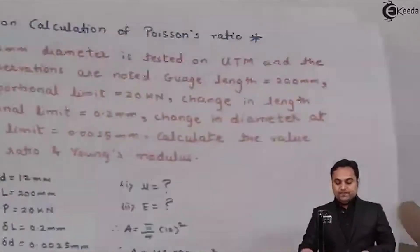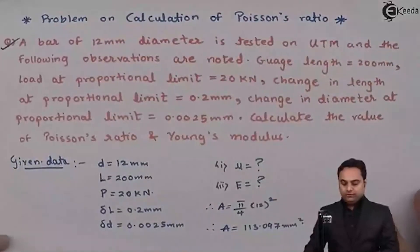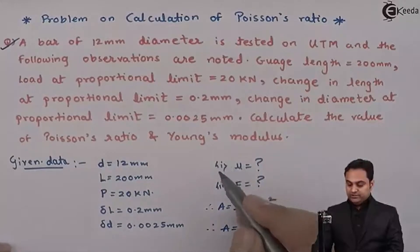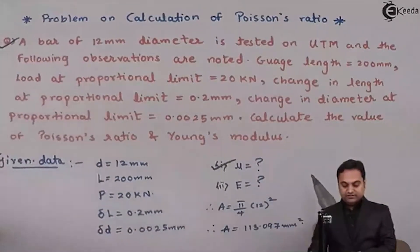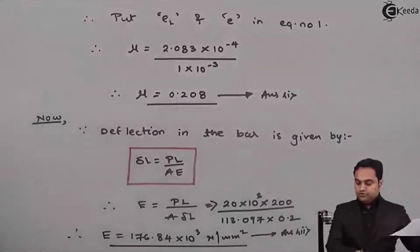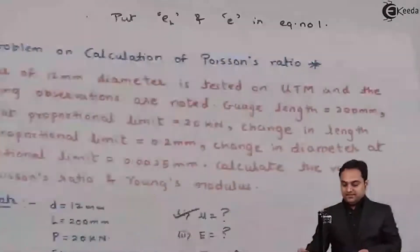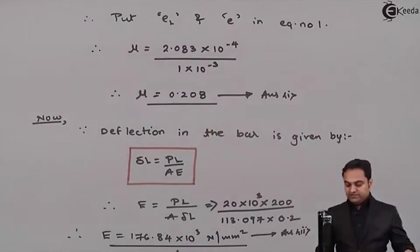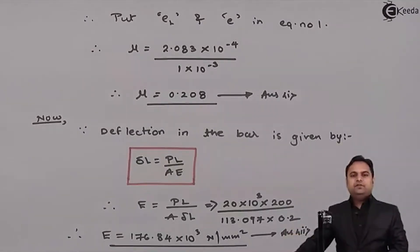So here in this video we have seen how to calculate the Poisson's ratio and Young's modulus. Poisson's ratio, our first answer, was 0.208 and the second question was Young's modulus whose value is 176.84 into 10 raised to 3 Newton per mm square. Once we have found out these values we can say that the problem is completed.